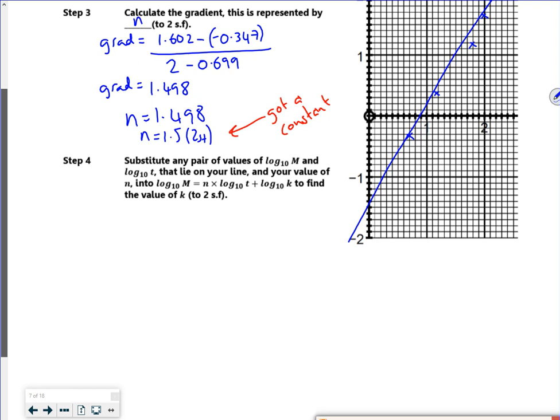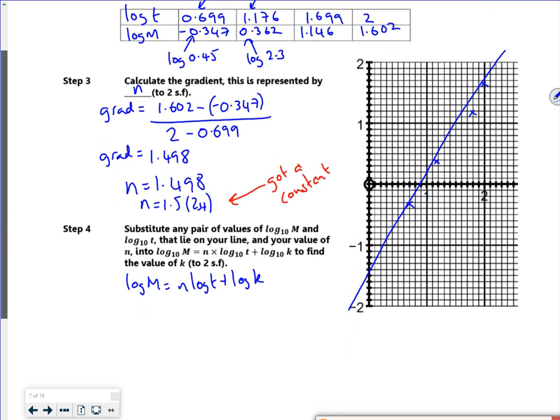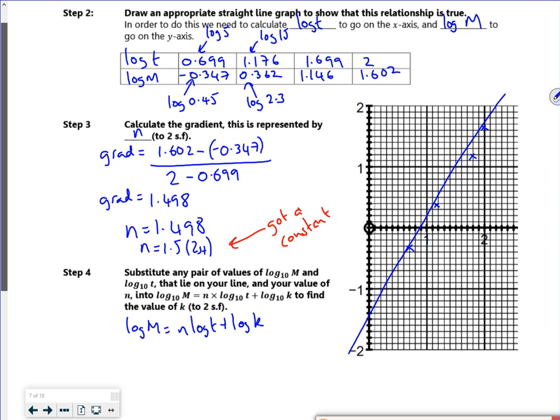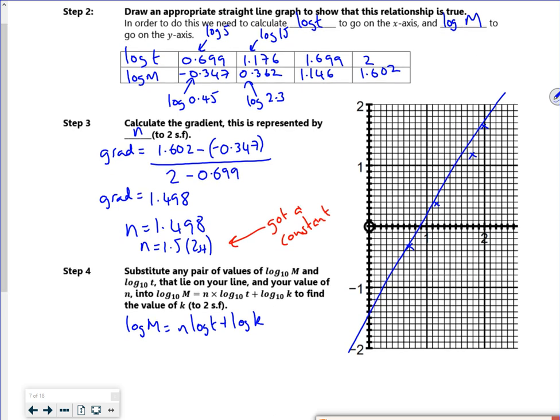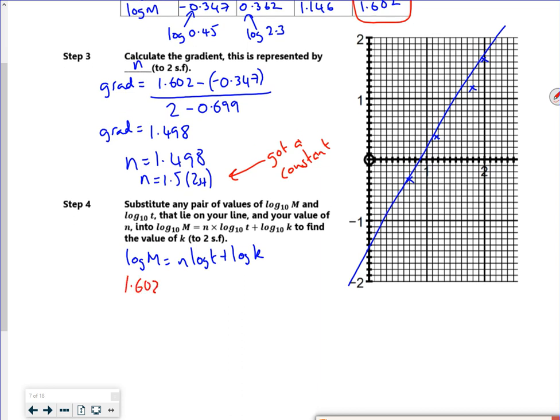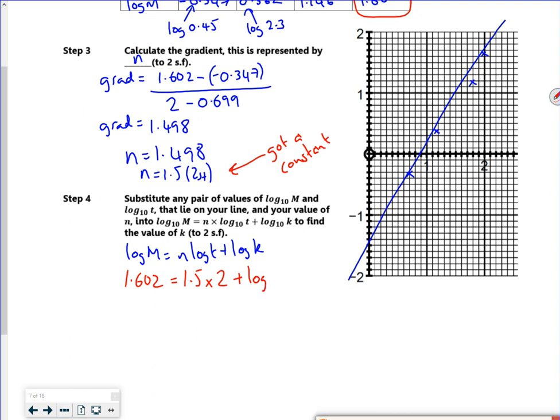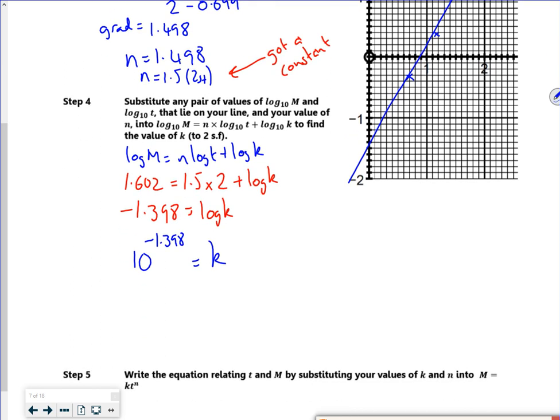Right then. So I've got my equation. So log m is n log t plus log k. So sub in, if I use the first point. So I've got my, oh, they've used the other point. Let's go with that. So they've actually used this point. We'll use this one. So we've got 1.602. It's n, which we said was 1.5. So log t, which we said was 2 plus log k. So they get minus 1.398 for log k. So log k is the intercept. And it's 10 to the power of minus 1.398. That gives me the k value. And that k value is 0.040 to 2 significant figures. So I've found the other constant now.